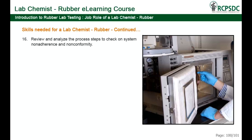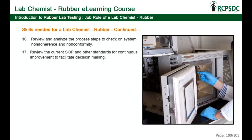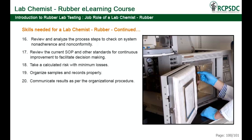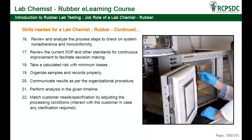Review and analyze the process steps to check on system non-adherence and non-conformity. Review the current SOP and other standards for continuous improvement to facilitate decision making, taking a calculated risk with minimum losses. Organize samples and records properly. Communicate results as per organizational procedure. Perform analysis in the given timeline. Match customer needs or specifications by adjusting the processing conditions. Interact with the customer in case any clarification is required.